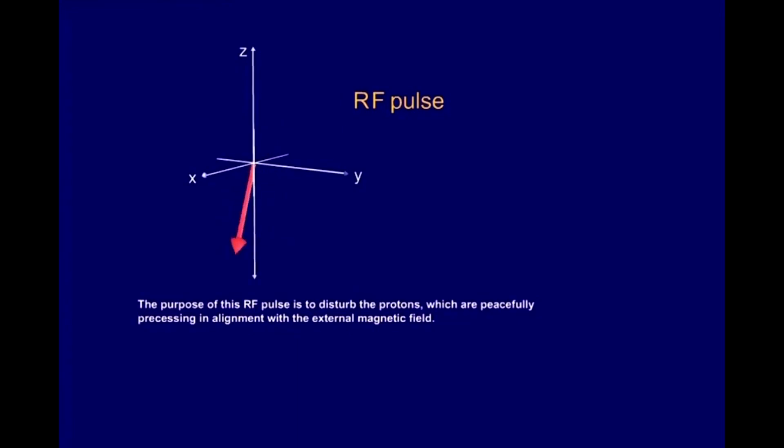The purpose of this RF pulse is to disturb the protons which are peacefully precessing in alignment with the external magnetic field. We'll hear about the details later, but not every RF pulse disturbs the alignment of the protons.